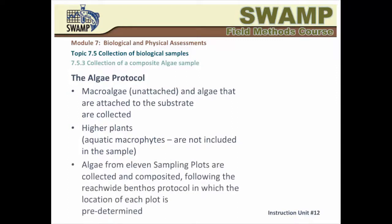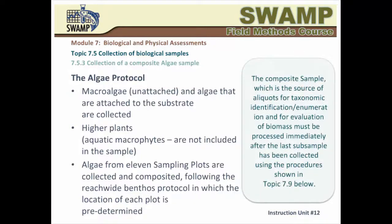Eleven sampling points are identified following the described sampling design, and the substrate particle at each point becomes the location of a sampling plot of a given area measured in square centimeters. Thus, eleven plots are sampled, and the subsamples are composited. You keep track of the area of each plot in order to compute the total area sampled. You also measure and record the total volume of the composite sample and relate it to the total area sampled.